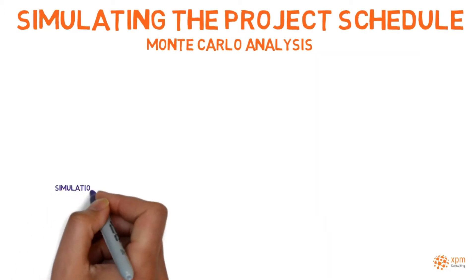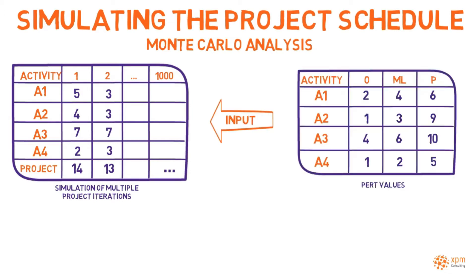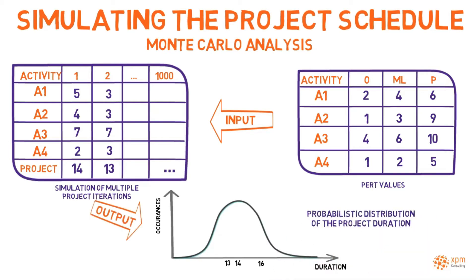Monte Carlo is based on the simulation of multiple project iterations. Each iteration generates a duration for all project activities, using as an input the optimistic, most likely, and pessimistic estimates issued by the team. Each iteration will then aggregate those activity durations into an overall project duration according to the dependencies of the network diagram. By completing multiple iterations, the Monte Carlo analysis can calculate the probabilistic distribution of the project duration.